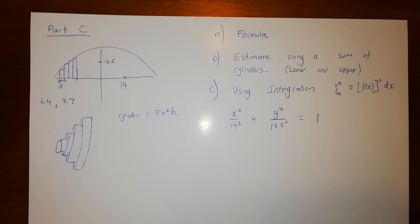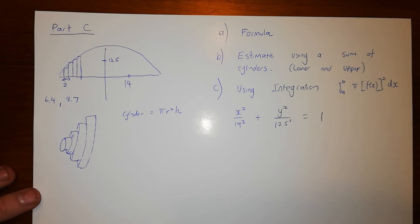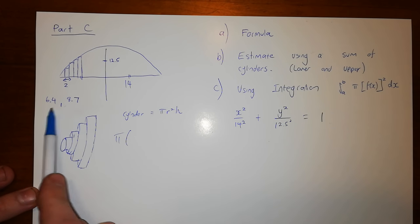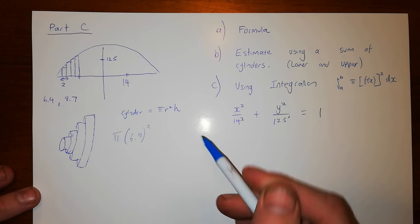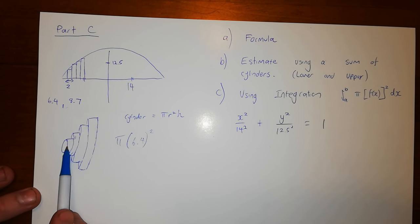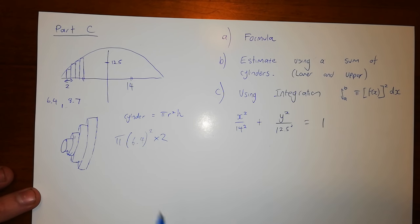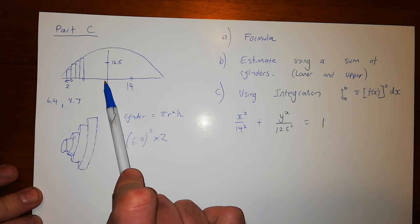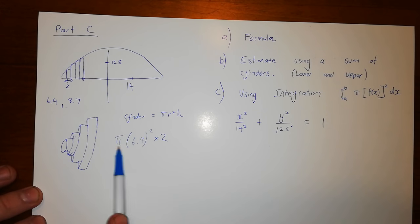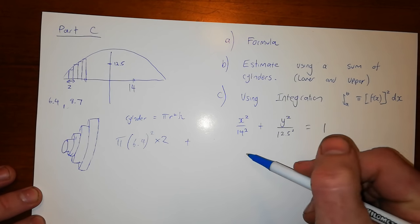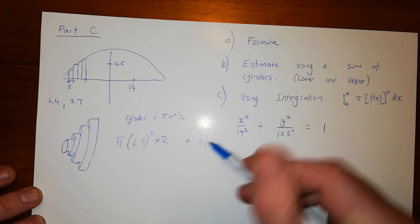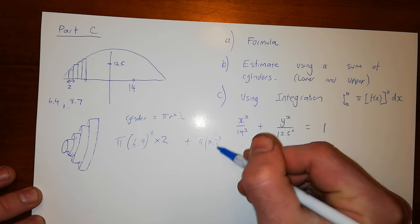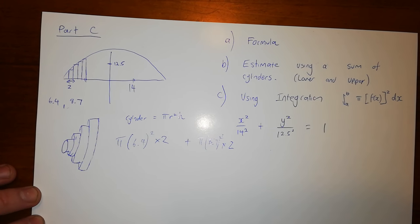So the calculation that you'll be doing then for the sum of cylinders will be π times the radius squared. Now the radius is these particular lengths that we have here. So π times 6.4 squared, and the height is 2. All of these cylinders have a height of 2. And you'll do that for all of those particular values. That'll take you to there, and that would be the volume of half of the watermelon. So then you'll just times your final answer by 2. So this would be the first cylinder plus the volume of the second cylinder would be π, the radius is 8.7 squared, and then again times the height which is 2. And you'll find there'll be some common factors there.